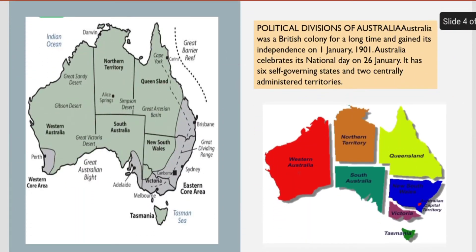In my next slide, I represent the political divisions of Australia. Australia was a British colony for a long time and gained its independence on 1st January 1901. It has 6 self-governing states and 2 centrally administered territories.